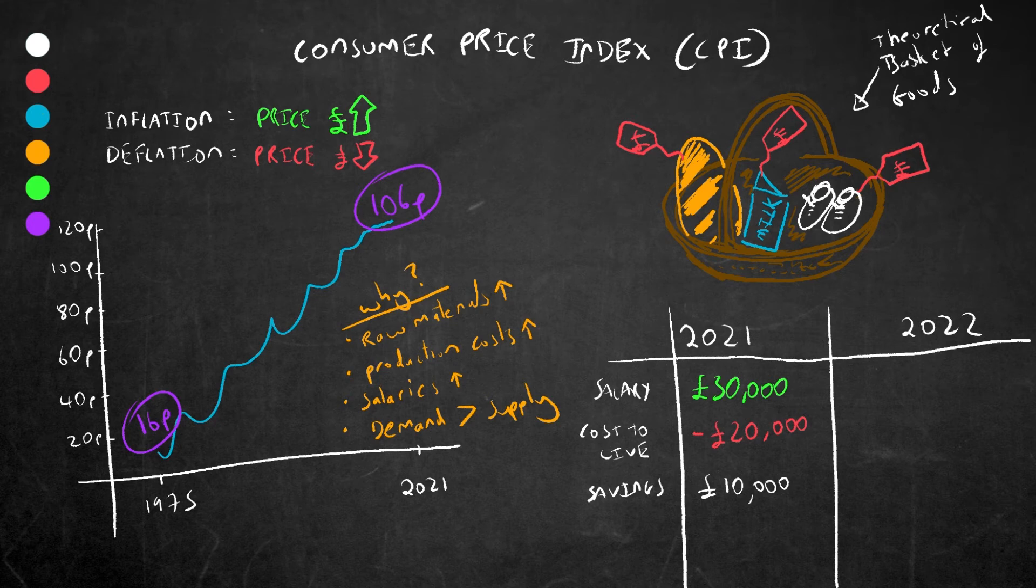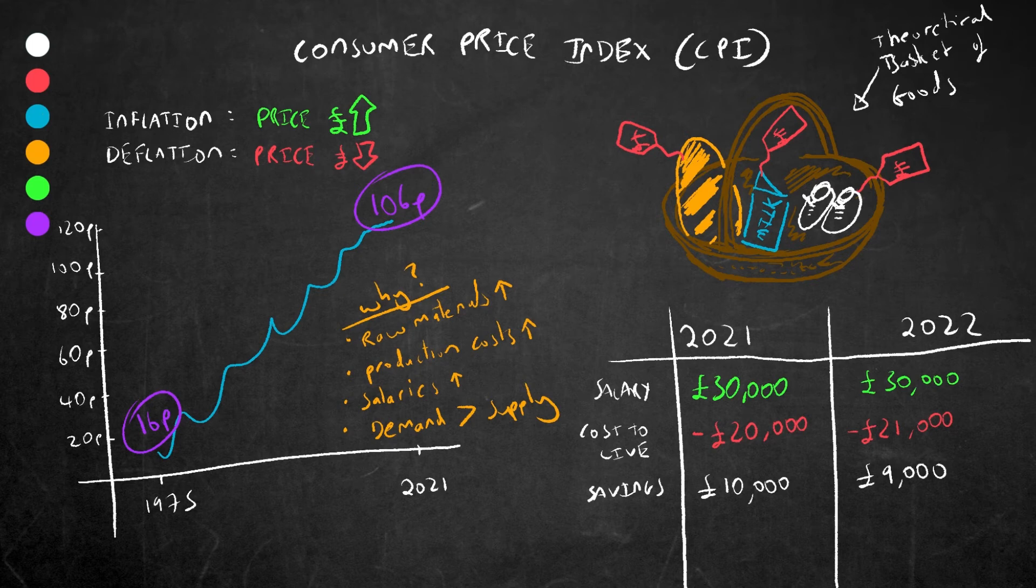On a 5% inflation rate, your cost of living in one year's time in 2022 will essentially be £21,000. Now, if your salary doesn't go up accordingly to match inflation, then now you're only saving £9,000 a year and this goes on and on.